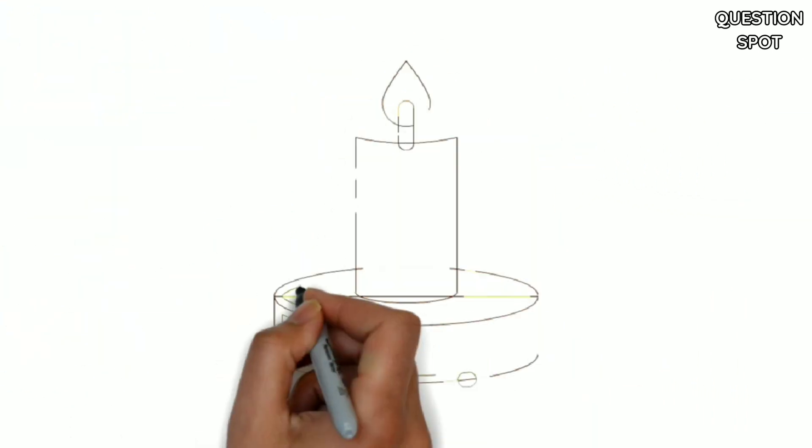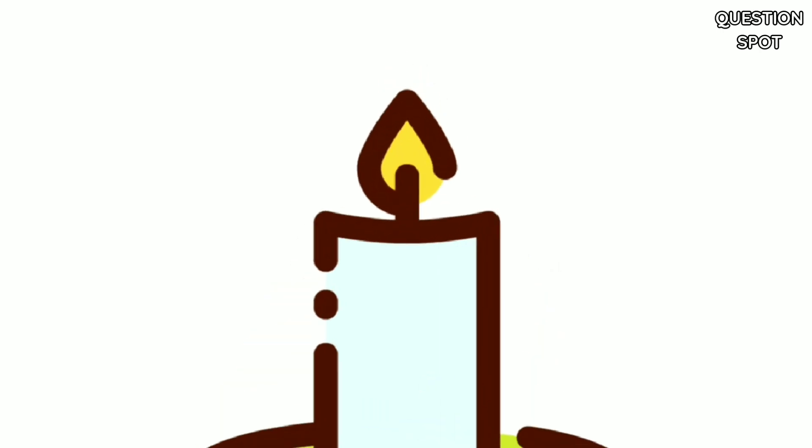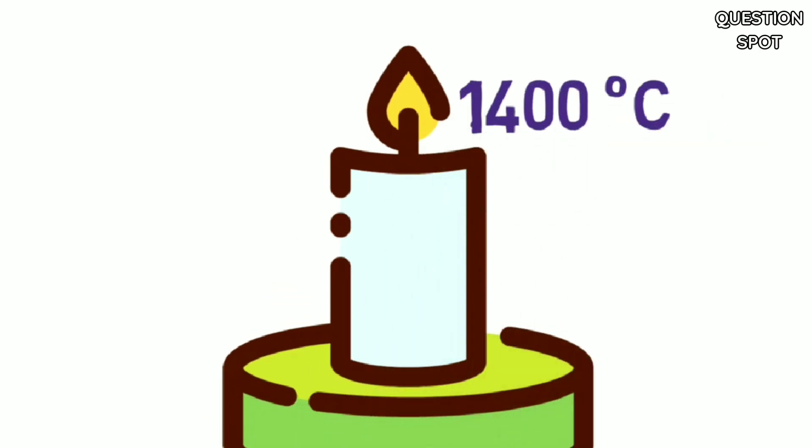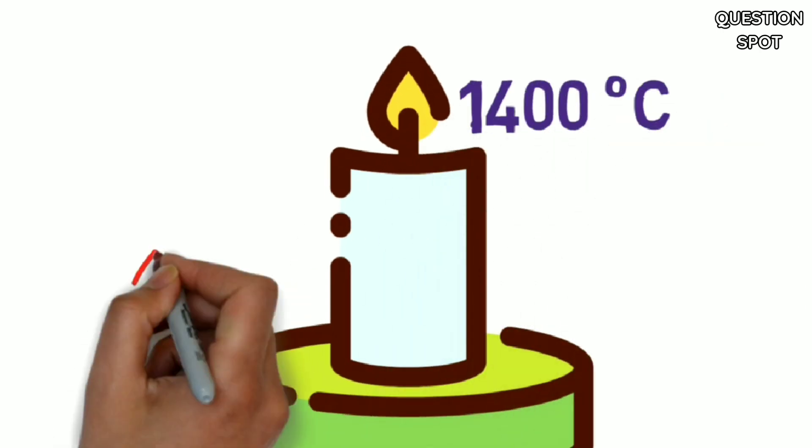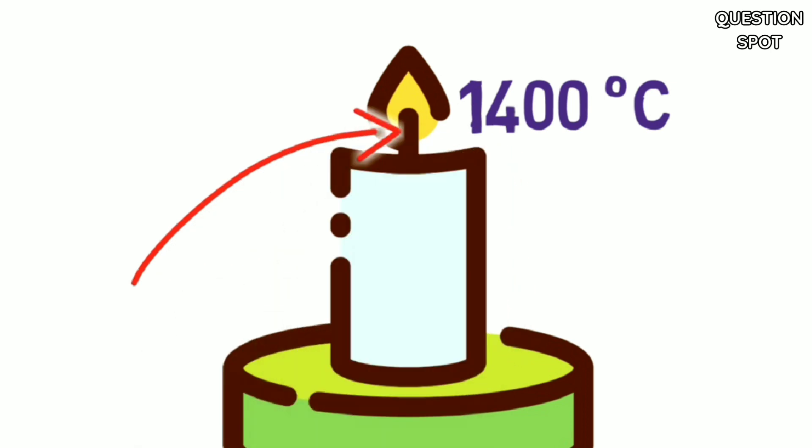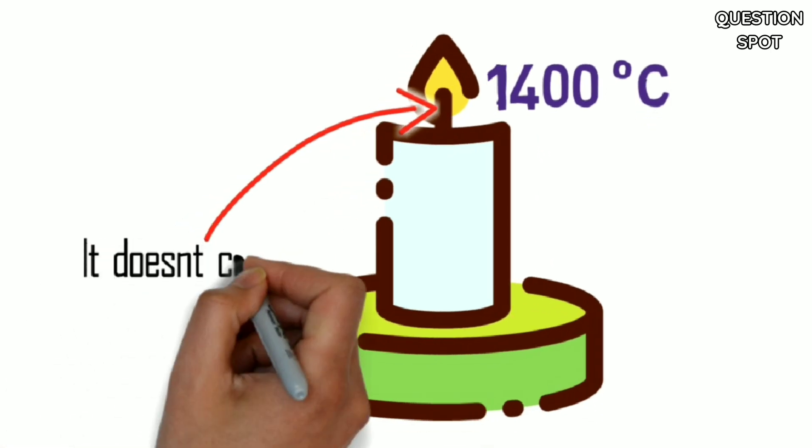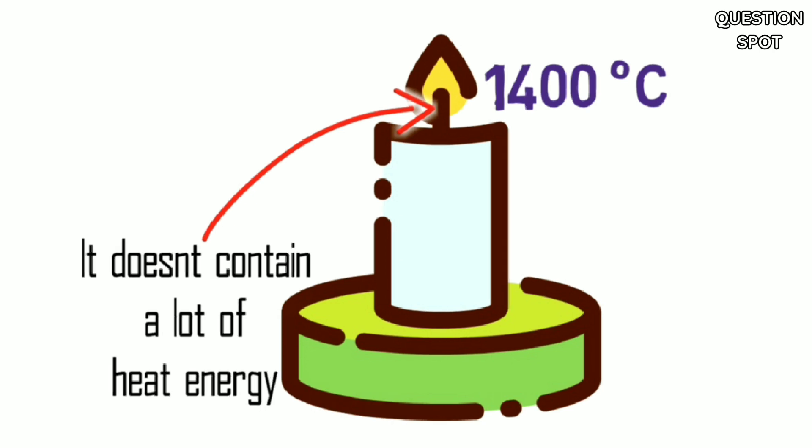If the fire is a burning candle, parts of the flame can be as hot as 1400 degrees Celsius. However, since the wick is small and thin, the hot area is tiny, so it doesn't contain a lot of heat energy.